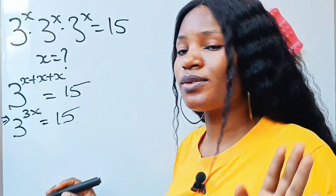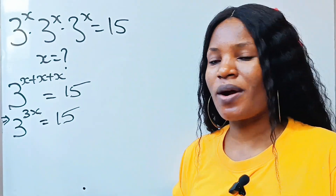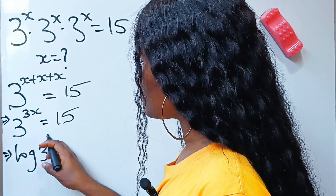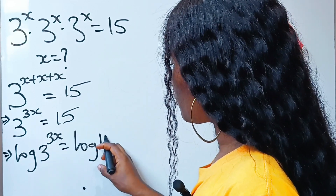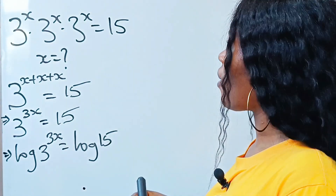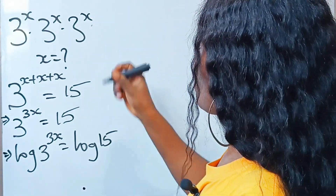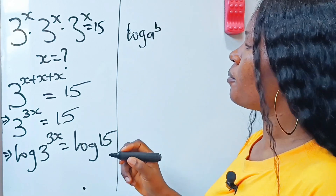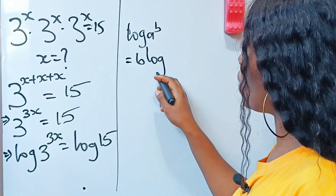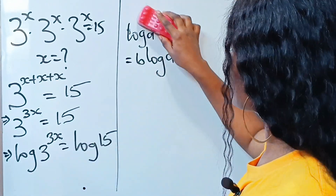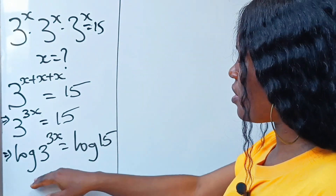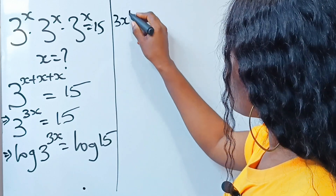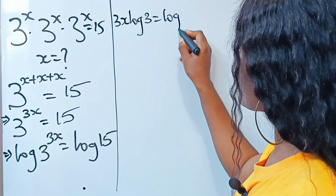At this point, the only thing we can do now is to introduce logarithms into the equation. So let's introduce log to both sides of this equation. This implies that log 3 to the power of 3x is equal to log 15. Now let's use the power rule. The power rule states that when you have log A raised to the power of B, that is the same thing as B multiplied by log A. So this is the same thing as 3x multiplied by log 3 is equal to log 15.